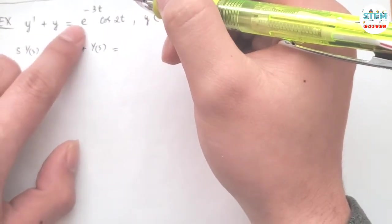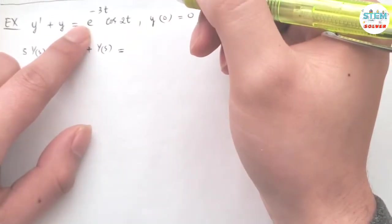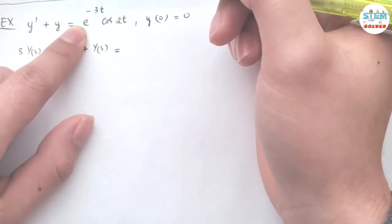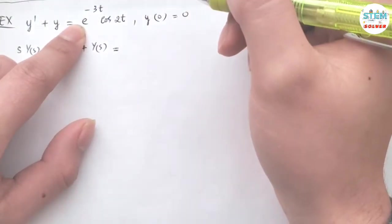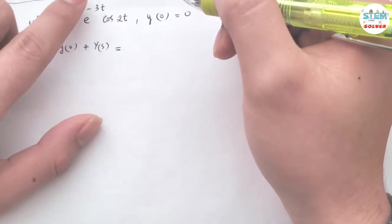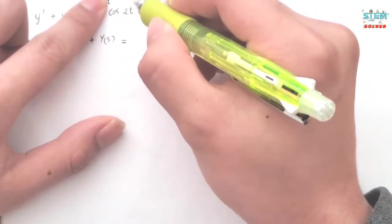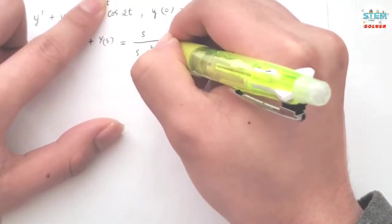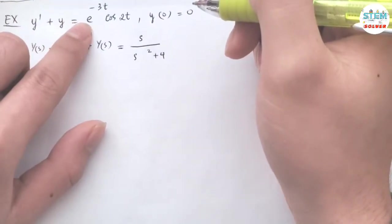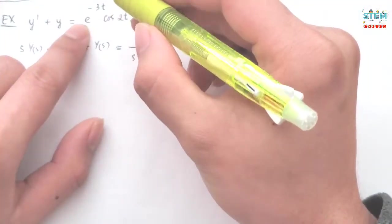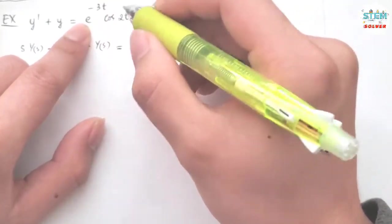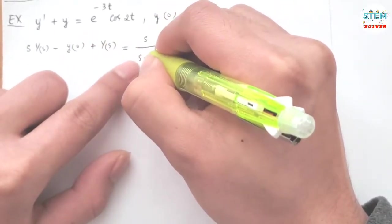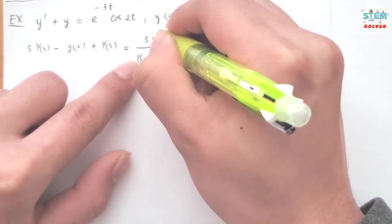On the right side, we find the Laplace transform using the translation on the s-axis theorem. The Laplace transform of cos 2t is s over s squared plus 4. Since we have e to the negative 3t, the shift a equals negative 3, so we replace s with s plus 3. We get s plus 3 over s plus 3 squared plus 4.